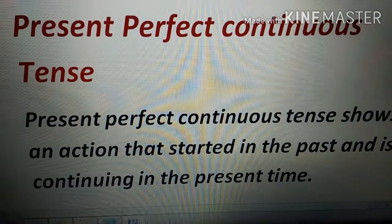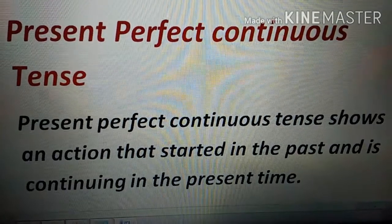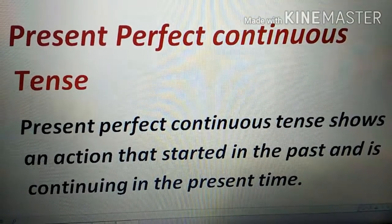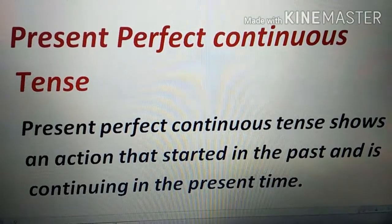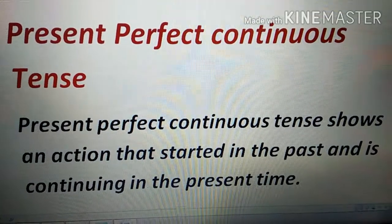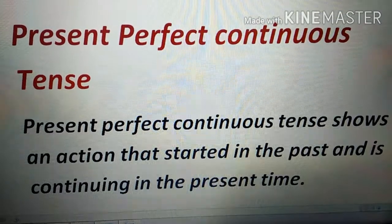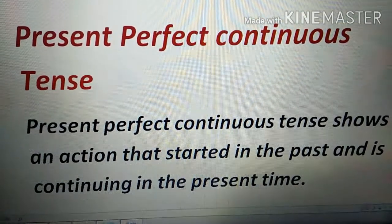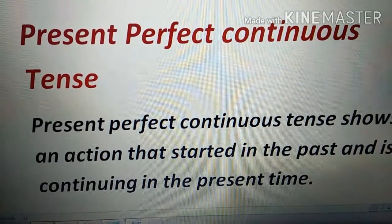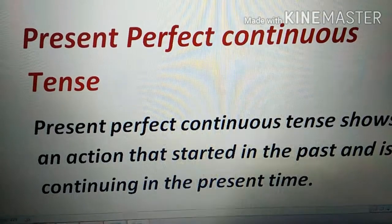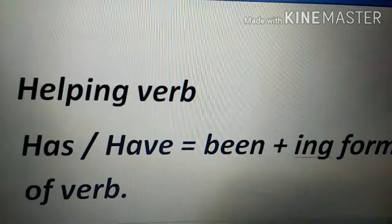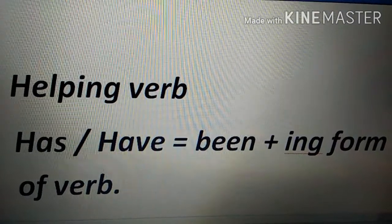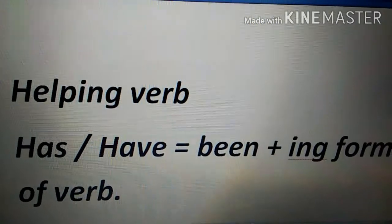Our next and last type of present tense is the present perfect continuous tense. Whenever the word 'continuous' appears in a tense name, remember it involves the 'ing' form because the action is still continuing. Present perfect continuous tense shows an action that started in the past but is still continuing in the present time — for example, 'We have been learning tenses.' The formula adds 'been': has/have plus been plus the 'ing' form of the verb.